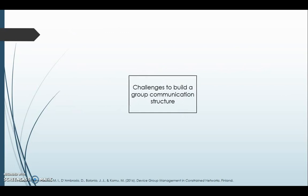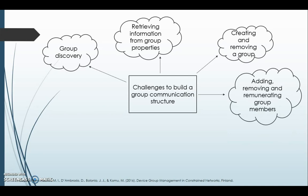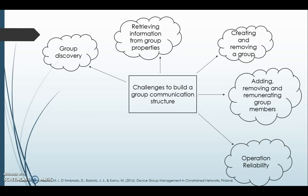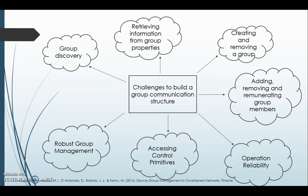We would now like to talk about the challenges to build a group communication structure. The first challenge is group discovery — the capability to discover a group or members of a group. The second is retrieving information from group properties, meaning retrieving information of resources available in a group. The third is creating and removing a group. The fourth is adding, removing, and enumerating group members. The fifth is operation reliability, meaning the application can select reliable or unreliable group communication. The sixth is access control primitives, where authorized entities are allowed to manage and perform operations within groups. The seventh and last is robust group management, which considers failure or sleeping node situations.